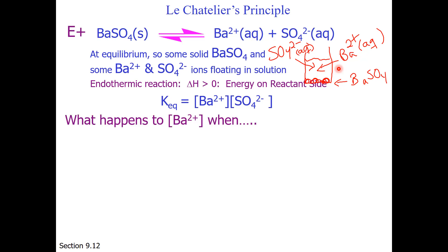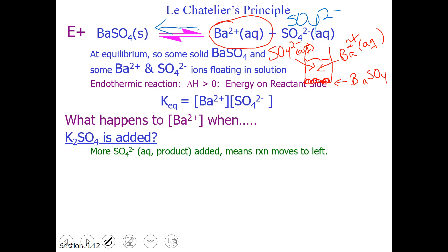So we'd like to know, what happens to barium 2+ when we add potassium sulfate? We're interested in the fate of the barium, and when we add potassium sulfate, that means we are putting more material on the product side of the reaction. If you increase product, which way do you shift? I hope you believe the reaction shifts to the left. So whenever a reaction shifts to the left, what happens to the product concentrations? They go down. So barium ion concentration will decrease.